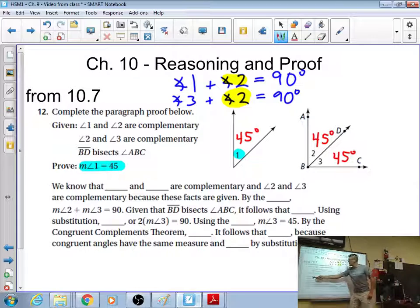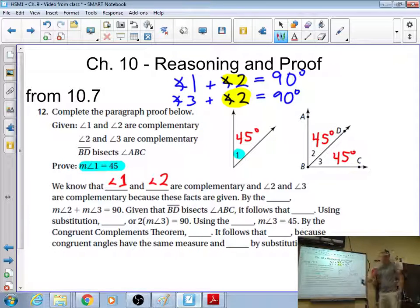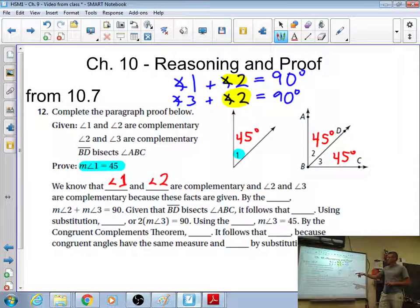So, we know that, this is how you're saying, the given statements, blank and blank are complementary, and angle 2 and angle 3. Well, since they already cover angle 2 and angle 3, this is angle 1 and angle 2. Because it's given. We know this. Not we inferred. Not we deduced. We know it. We're told it.